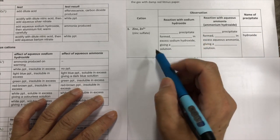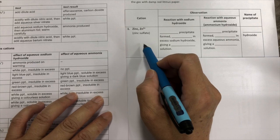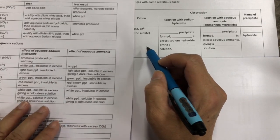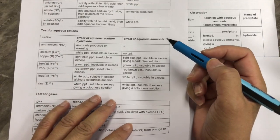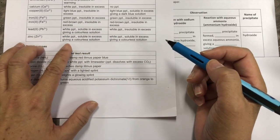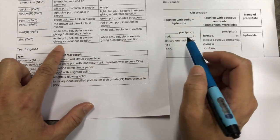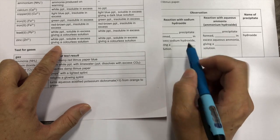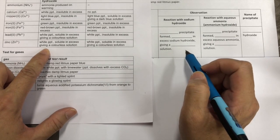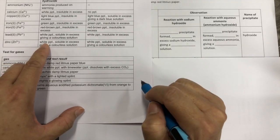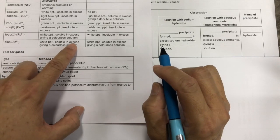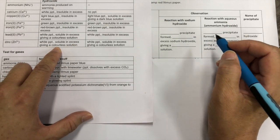For example, your zinc cation test. You refer to your notes for QA under zinc and see the effect of aqueous sodium hydroxide with zinc cation, which is white precipitate, soluble in excess, giving a colourless solution.